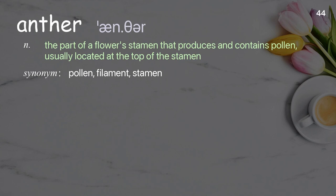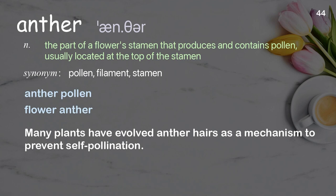Anther: The part of a flower stamen that produces and contains pollen, usually located at the top of the stamen. Examples: anther pollen, flower anther. Many plants have evolved anther hairs as a mechanism to prevent self-pollination.